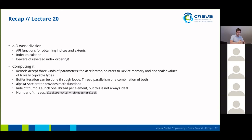We had an example where we computed pi. We've seen that kernels accept three different kinds of parameters: the accelerator parameter, pointers to device memory, and scalar values of trivially copyable types. We've seen how buffer iteration can be done in Alpaca, either through loops, through thread parallelism, or a combination of both depending on your needs. The Alpaca accelerator provides math functions. You should launch one thread per element, but this is not always ideal — you have to launch as many threads as is suitable for your problem. You can calculate the total number of threads by multiplying the blocks on the grid by the threads on the block.